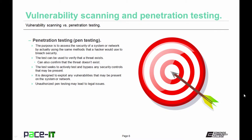The purpose of pen testing is to assess the security of a system or network by actually using the same methods that a hacker would use to breach security — that includes social engineering. The test can be used to verify that a threat exists, and at the same time pen testing can also confirm that a threat doesn't exist. The pen test seeks to actively test and bypass any security controls that may be present, and is designed to exploit any vulnerabilities on the system or network. Again, unauthorized pen testing may lead to legal issues.